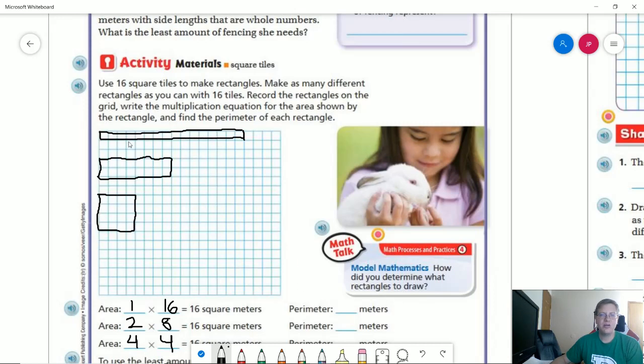And so our perimeter for this first one, assuming that I did that correctly, would be 16 plus 16, which would be 32 plus one plus one plus one would give us 34. This one would give us eight plus two plus eight plus two, which would give us 20.